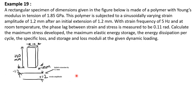Let us solve a problem based on the dynamic loading of polymers. A rectangular specimen of dimensions given in the figure is made of a polymer with Young's modulus in tension of 1.85 gigapascal. This polymer is subjected to a sinusoidally varying strain amplitude of 1.2 millimeter after an initial extension of 1.2 millimeter, with a strain frequency of 5 hertz at room temperature. The phase lag between the strain and stress is measured to be 0.11 radian. We need to calculate the maximum stress developed, the maximum elastic energy storage, the energy dissipation per cycle, the specific loss, and the storage and loss moduli.